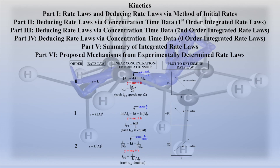Welcome to Part 6 of Kinetics Review. This video will focus on mechanisms given a previously experimentally determined rate law for a reaction. Before we begin, it is worth mentioning that the student should have first viewed videos one through five of this review to ascertain how a rate law is experimentally determined.